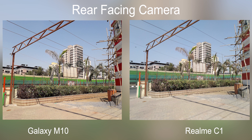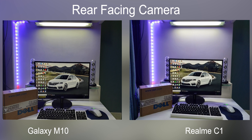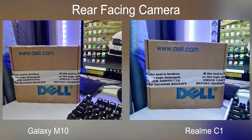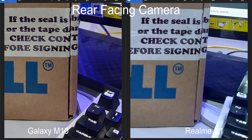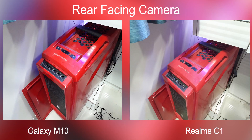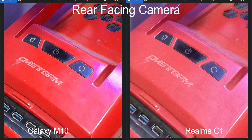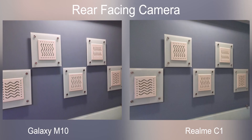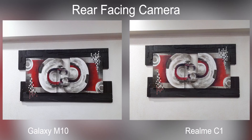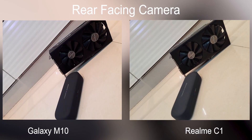Moving on to indoor conditions, the differences grow even more apart. The Galaxy M10 not only has better colors but the HDR mode also works a lot better on the M10 compared to the Realme C1. If you zoom into the photos you can clearly see that the post-processing is a lot better on the Galaxy M10 — the image processing is superior and it retains more details. Kudos to Samsung for that; in indoor conditions the M10 is definitely better.